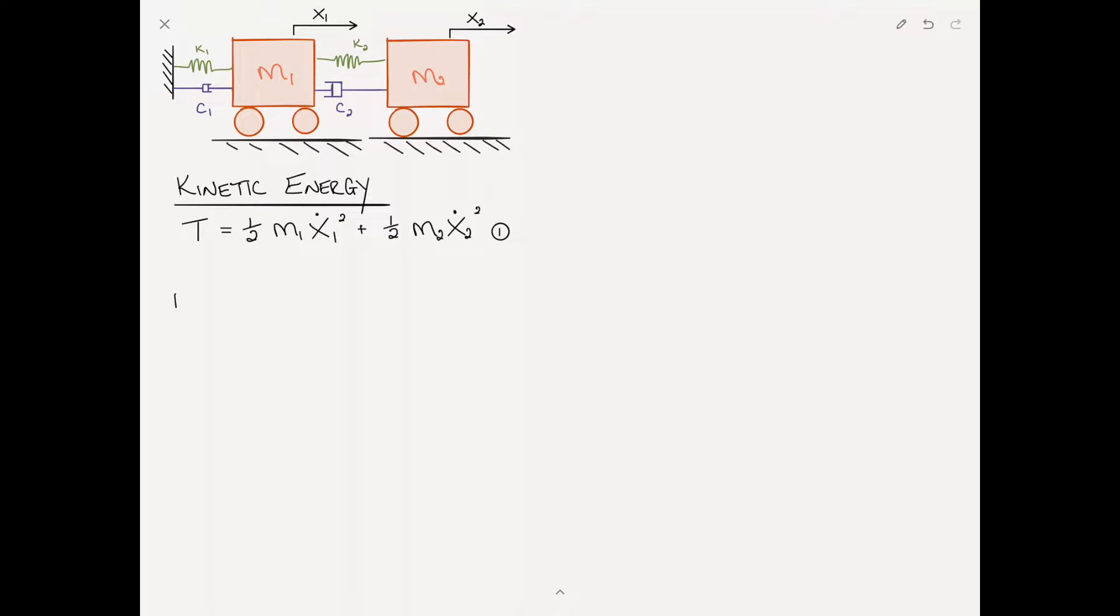Then the potential energy V is stored by the springs in the system. That's a half kx squared for each spring, where x is the displacement. For the first spring k1, the displacement is x1, so the energy is one half k1 x1 squared. For spring k2, it's plus one half k2 times x2 minus x1 quantity squared. We'll call that equation 2.